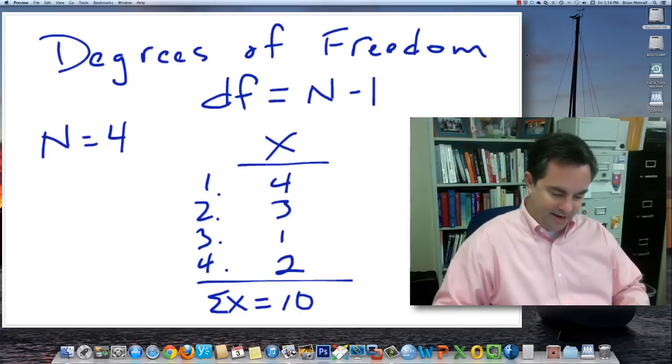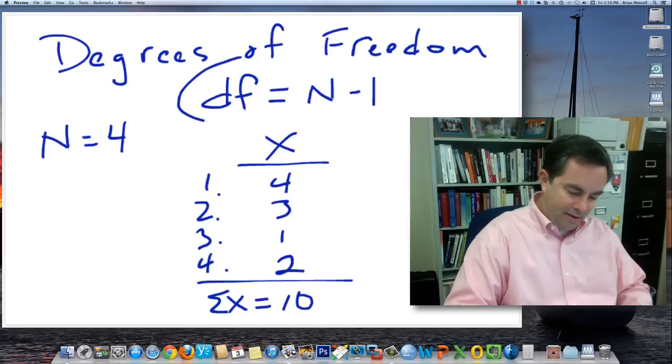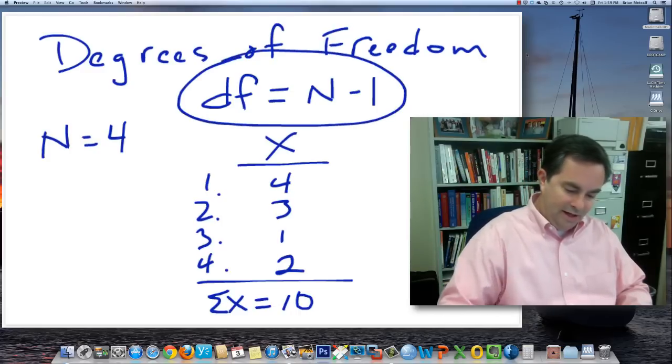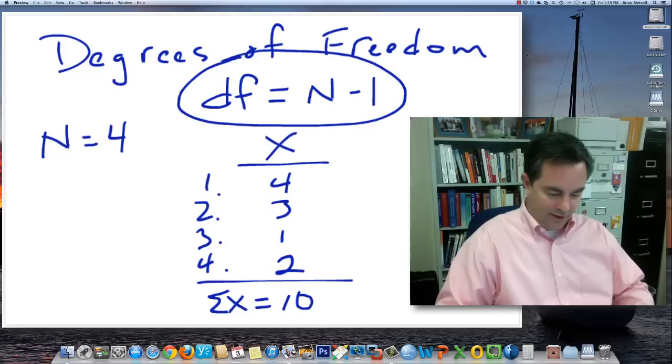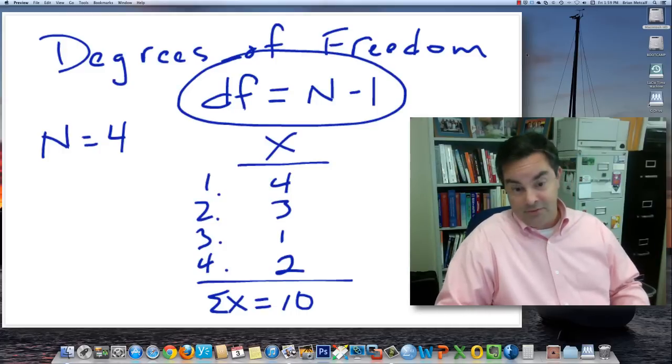So the data set, as we talked about, had one less degree of freedom. The degrees of freedom were one less than the total. So there were four numbers, so I had three degrees of freedom. Three of the numbers were free to vary.